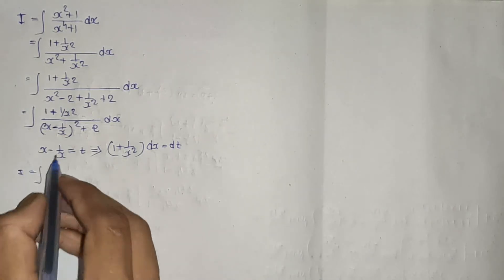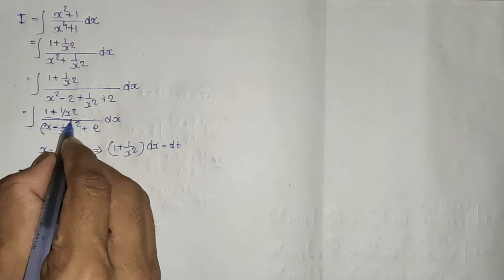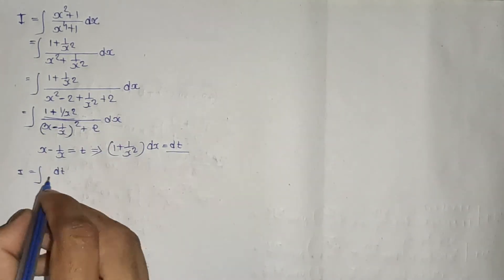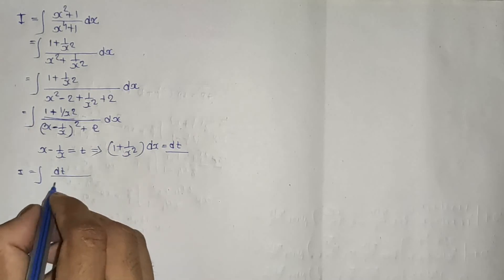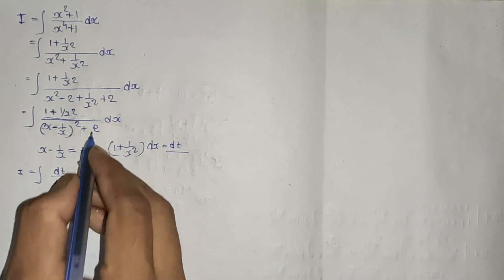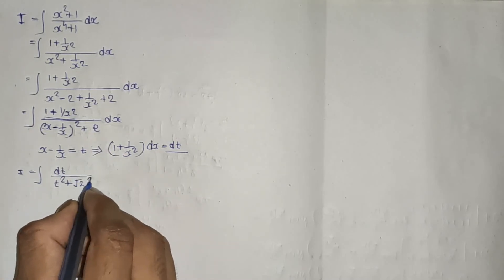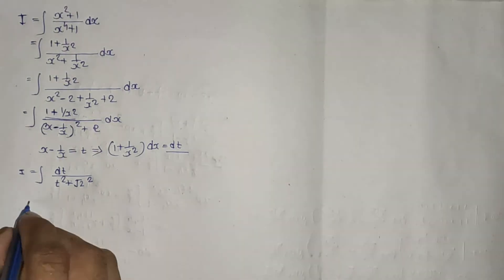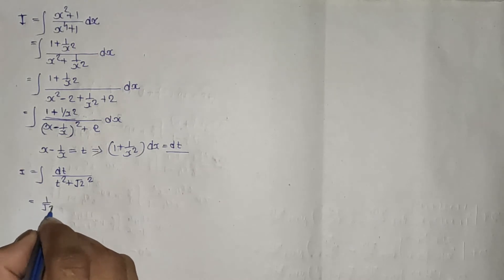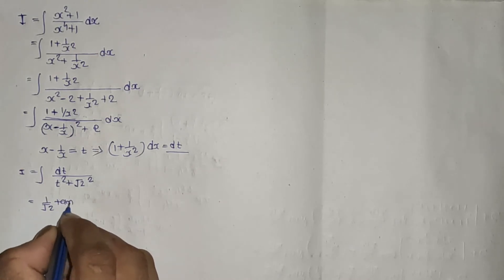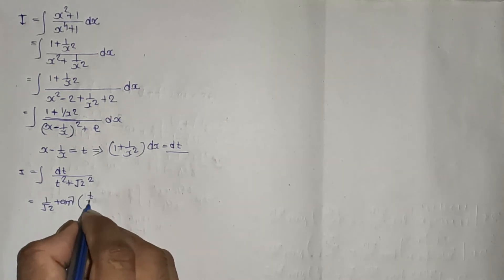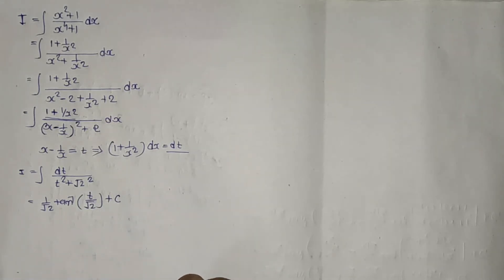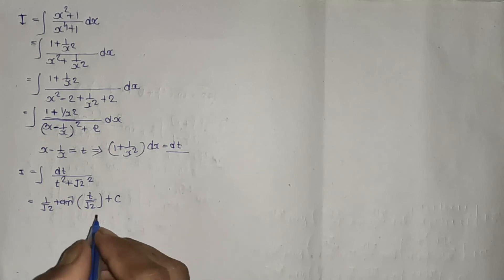So I equals integration of dt divided by (t² + (√2)²), which equals (1/√2) · tan⁻¹(t/√2) + C. Substituting back the value of t to get the answer.